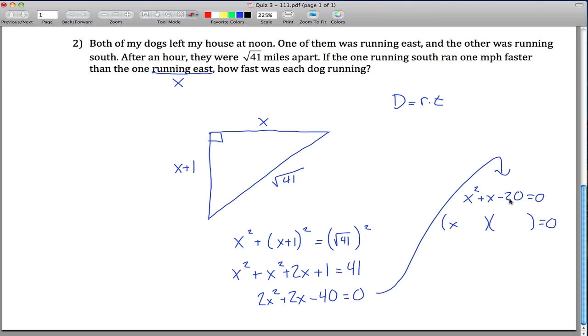We need two numbers that multiply to be negative 20 and add to be positive 1. If you mess with that for a little while, I think you'll get x plus 5 and x minus 4. So we got something times something equals 0. That means that either the first something equals 0 or the second something equals 0. We got two simple equations we can solve. Subtract 5 from both sides here. Add 4 to both sides here. And so what we get is that x is either negative 5 or 4.